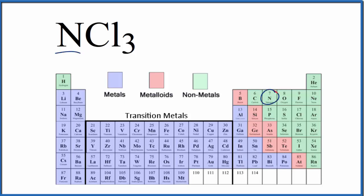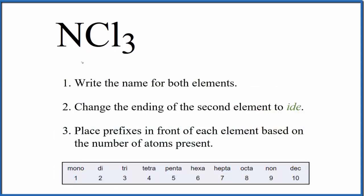Nitrogen, that's right here, and nitrogen is a non-metal. Chlorine, over here, another non-metal. Two non-metals mean that we have what's called a molecular or a covalent compound. So we can use these rules to write the name for NCl₃.